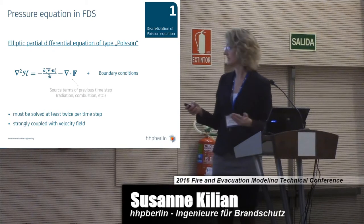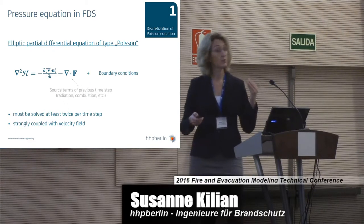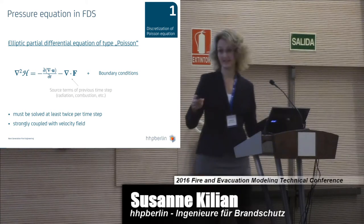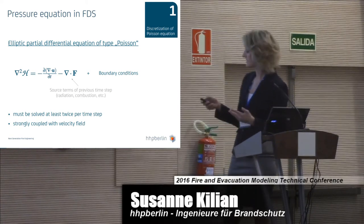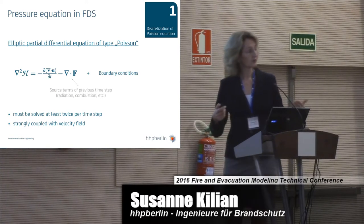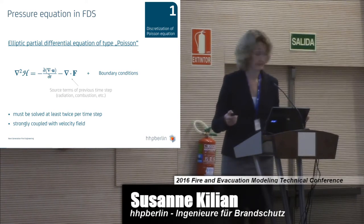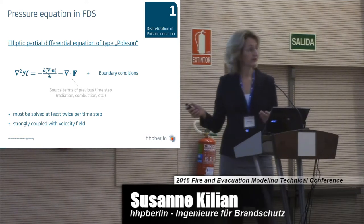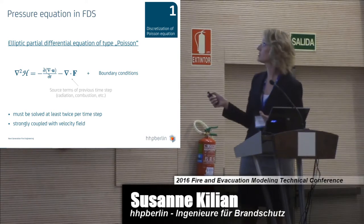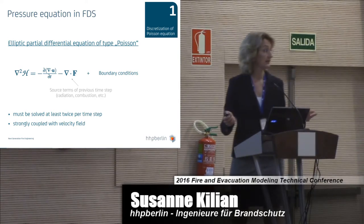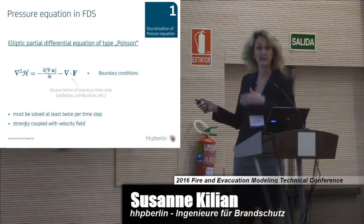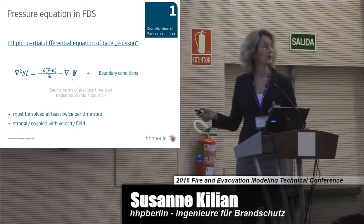This pressure equation has to be solved at least twice in every single time step in FDS, and there are many time steps. It's strongly coupled with the velocity field, so its efficient solution is very important for the whole scheme. From a mathematical point of view, it's an elliptic partial differential equation, also known as the Poisson equation. We additionally have to impose boundary conditions on the external boundary of the computational domain.